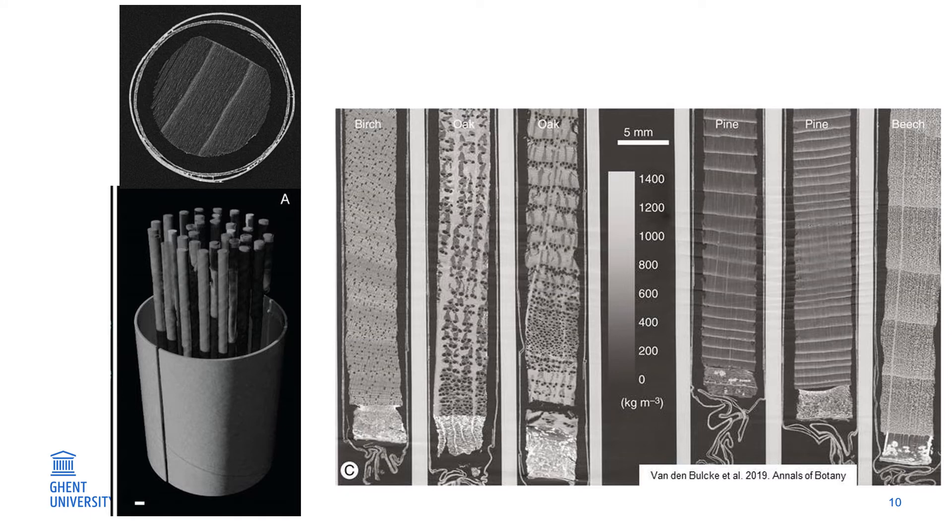Then we can scan it in three dimensions. We've done this for various tree species—birch trees, oak trees, pine trees, beech. Look at the detail here. You see the early wood vessels of oak. You can even see the birch vessels.